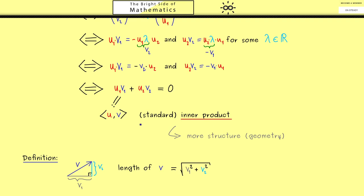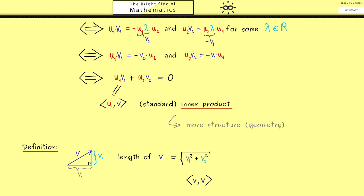However we can also use the inner product to formulate this expression here. Namely the inner product v with itself gives us the squares and the addition, and then we just take the square root. And this is now what we define to be the norm of v.